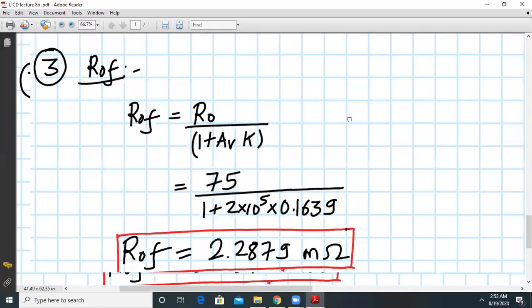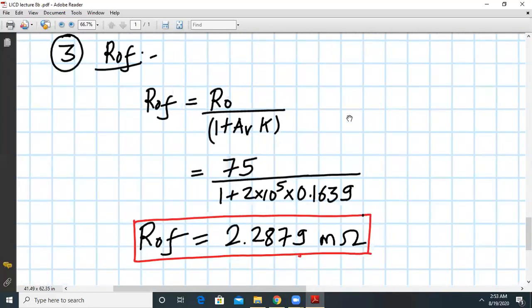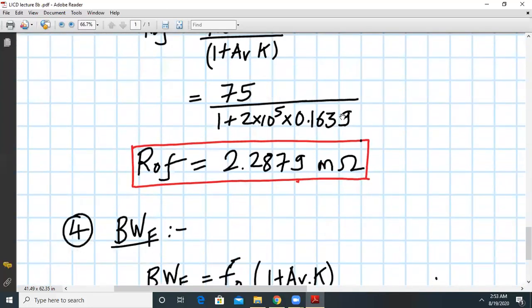Let us move next to Rof. So Rof for inverting amplifier is given by Rof is equal to Ro upon 1 plus K times Av. So we substitute the values in the calculator and we get the result as 2.2879 milliohms.